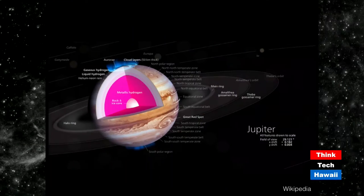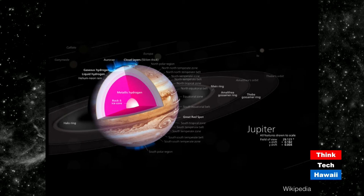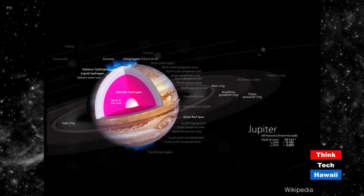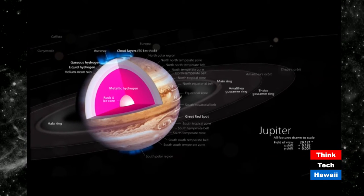Jupiter is the largest planet in the solar system and has more than 60 moons. Among the largest are Io, Europa, Ganymede, and Callisto. Scientists have found that particularly for Ganymede and Callisto, there are large amounts of water or water ice in their interiors — in sub-surface oceans within those moons.